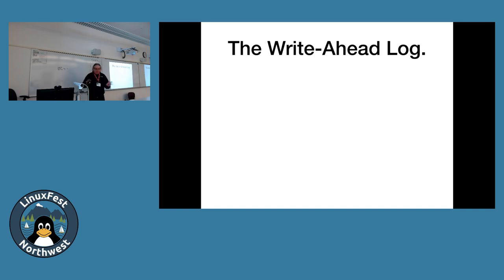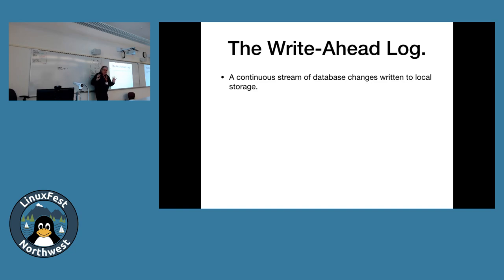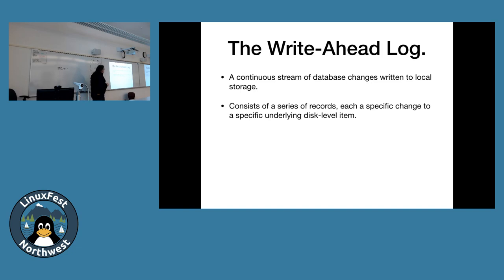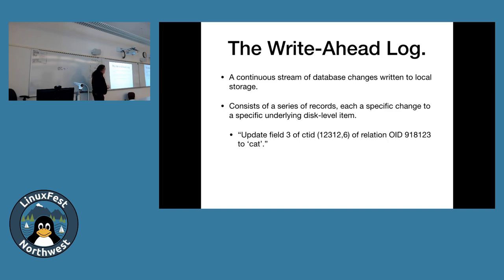The write-ahead log is a continuous stream of database changes written to local storage. It's been around since the early version 7s. Every database does something similar. In Postgres it's a series of variable-length records, each one being a specific change to an underlying disk-level item — things like 'update field number three of ctid X of relation Y to value Z.' That's the kind of information stored in the record.